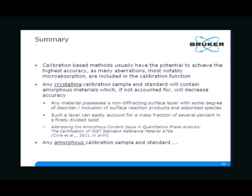Any crystalline calibration sample and standard will contain amorphous material which, if not accounted for, will decrease your accuracy. There is a paper coming up shortly by Jim Klein and colleagues giving a nice overview of the problems associated with standard materials used as internal standards. One of the important issues discussed in the context of SRM 676a corundum is that any material actually possesses a non-diffracting surface layer with some degree of disorder, inclusion of surface reaction products, and also adsorbed species. Such a layer can easily account for a mass fraction of several percent in a finely divided solid. If this is true, then it is also true for amorphous calibration samples — they will also have some crystalline component.